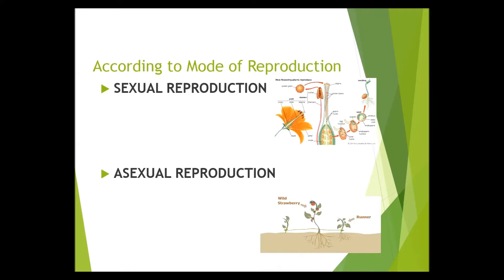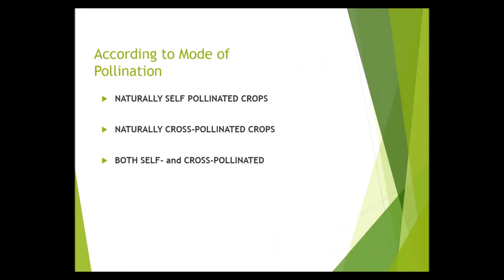Asexual reproduction is produced without the union of sexual gametes. Examples of this are red mung bean and strawberry. This will be further explained in plant material. Next is classification according to mode of pollination.